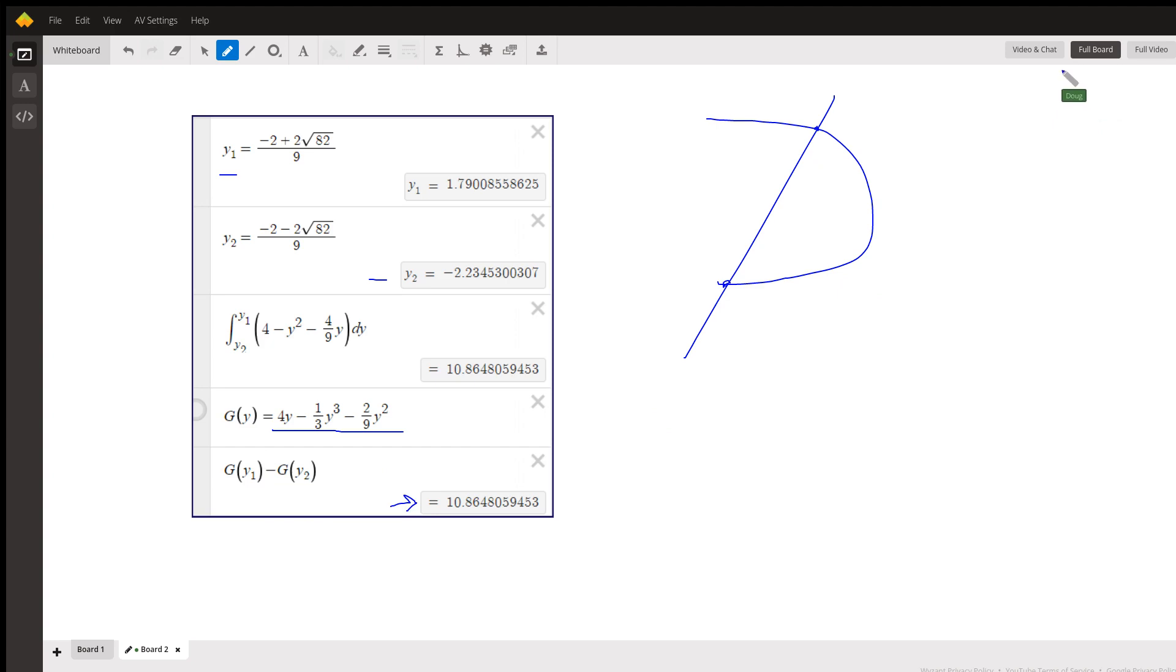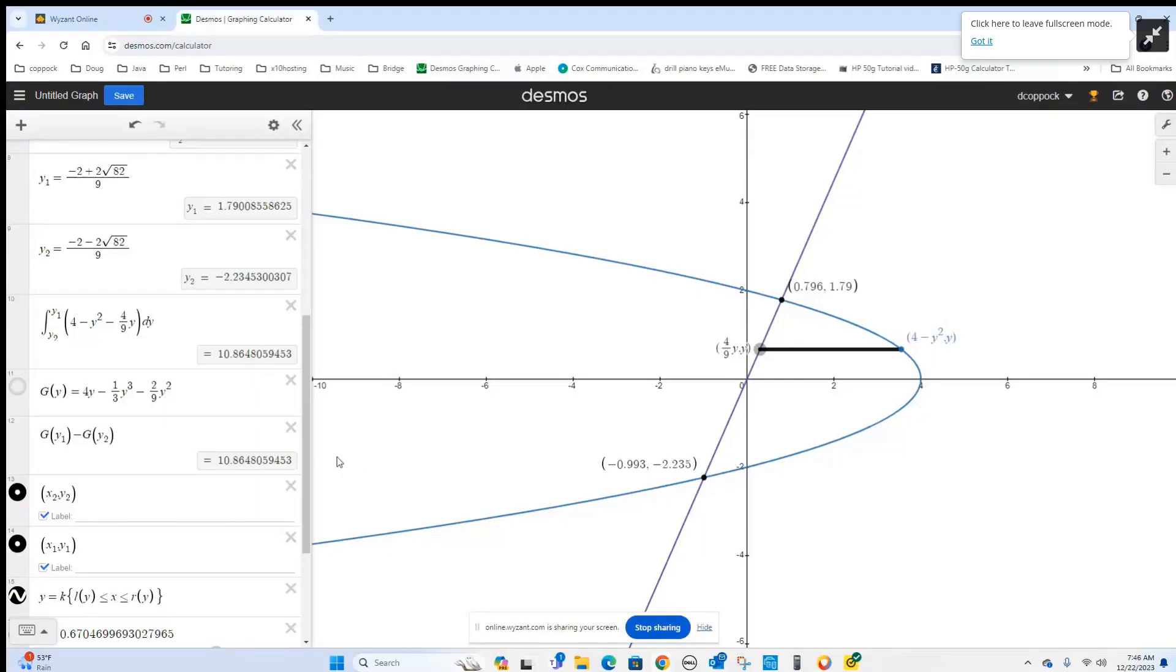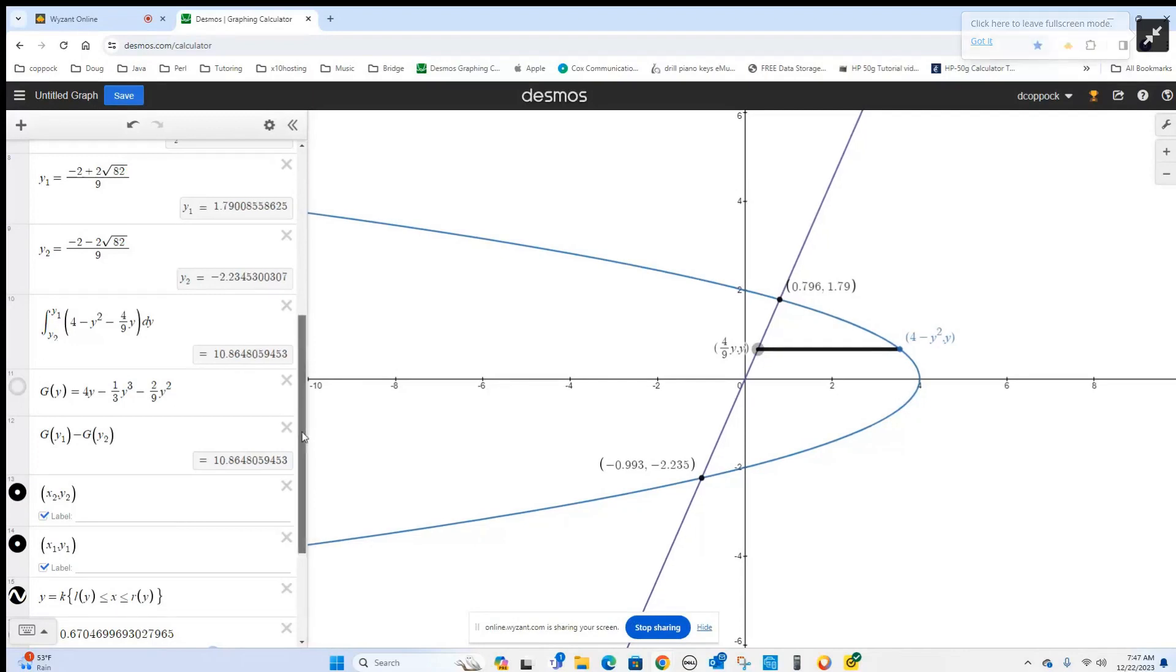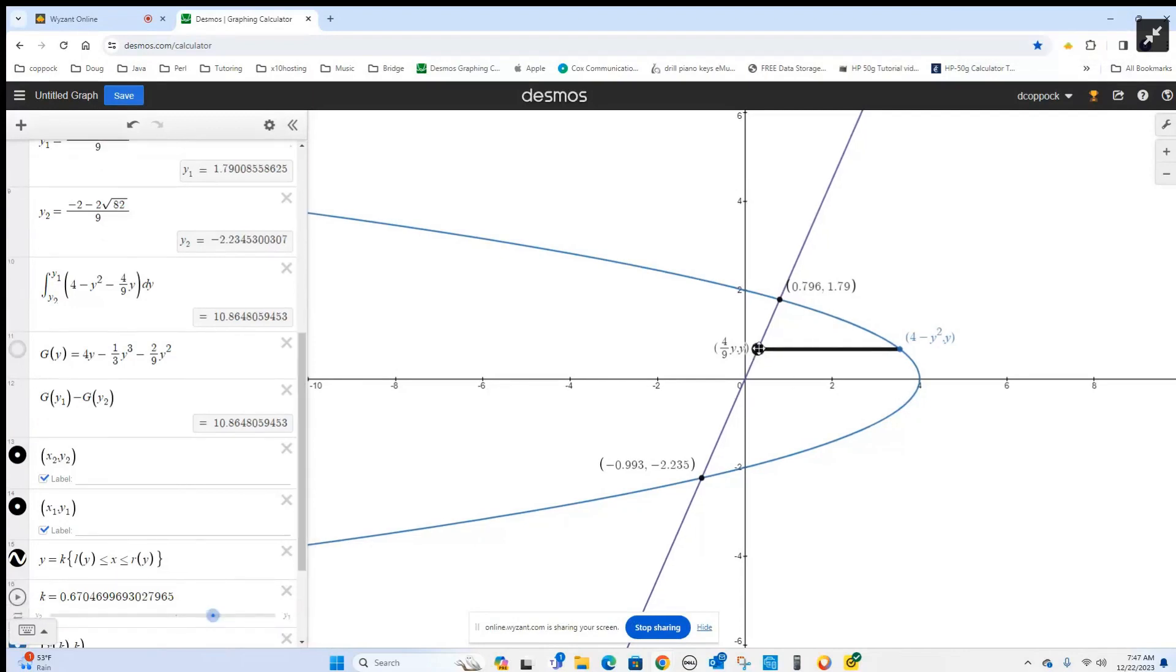Let's share the screen and go to Desmos just so you can see what's happening here. If I move this point up and down, those are your typical rectangles. That's why we're integrating from that y value up to this y value.